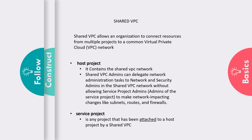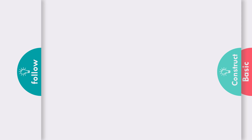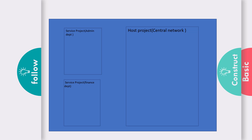The second component is the service project, which is the project that gets attached to the shared VPC network. Diagrammatically, I have a GCP account which contains three distinct projects: the host project and two separate service projects — one is the admin project and the other is the finance project. I want to create virtual machines within these service projects with IP addresses linked to the host project.